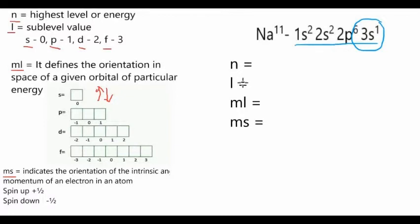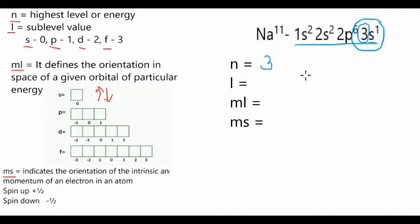The electron configuration ends at 3s1. For the principal quantum number n, it states that it is the highest level or energy. Looking at the end of our electron configuration, the number is 3, so our n is 3. Next is the l or sublevel value. We look at the letters or sublevels s, p, d, and f. We ended up in letter s, which has a value of 0, so our l is 0.